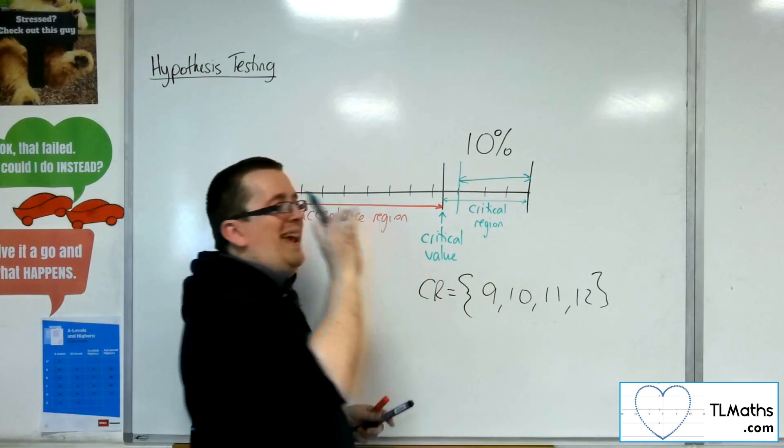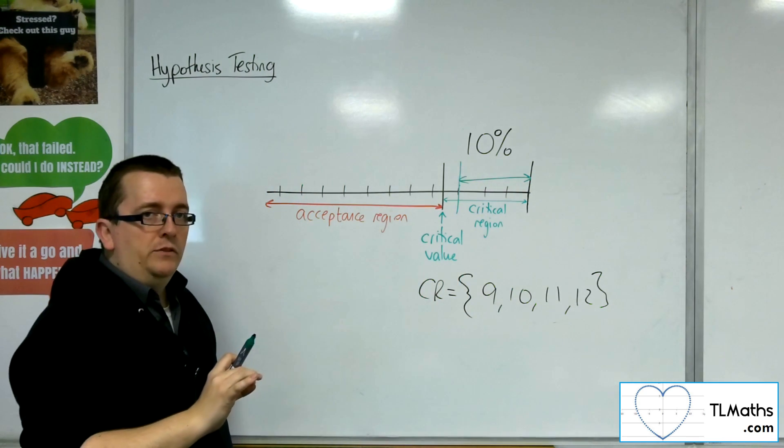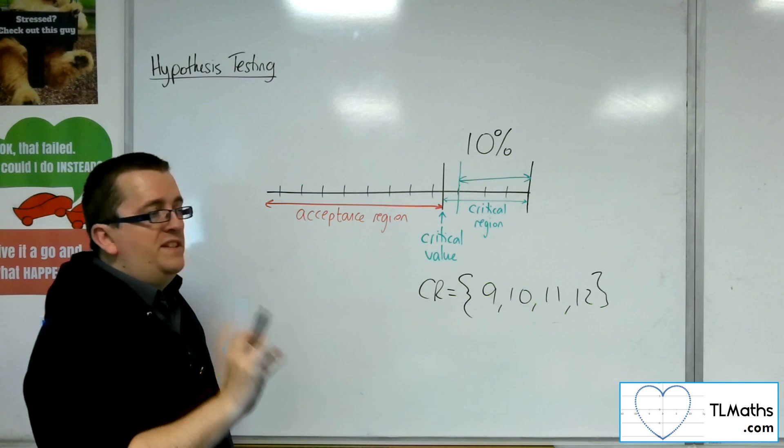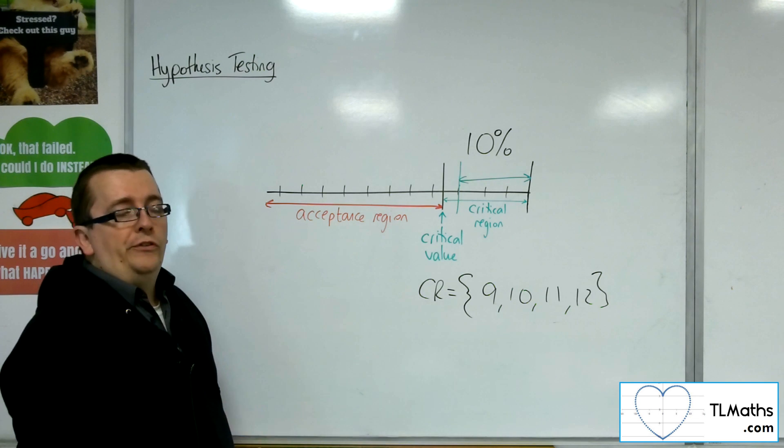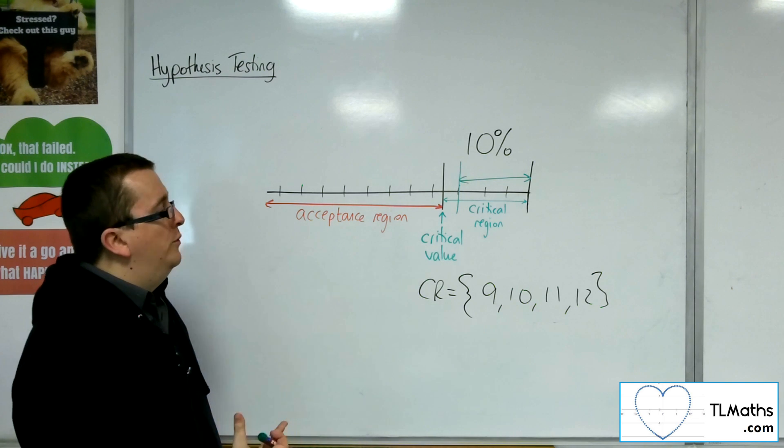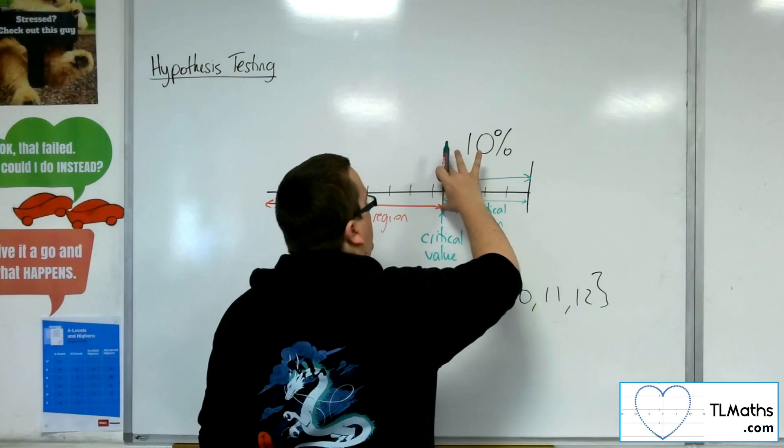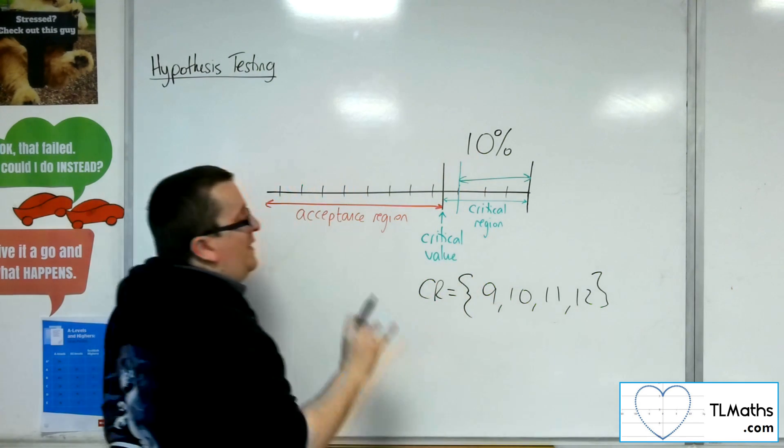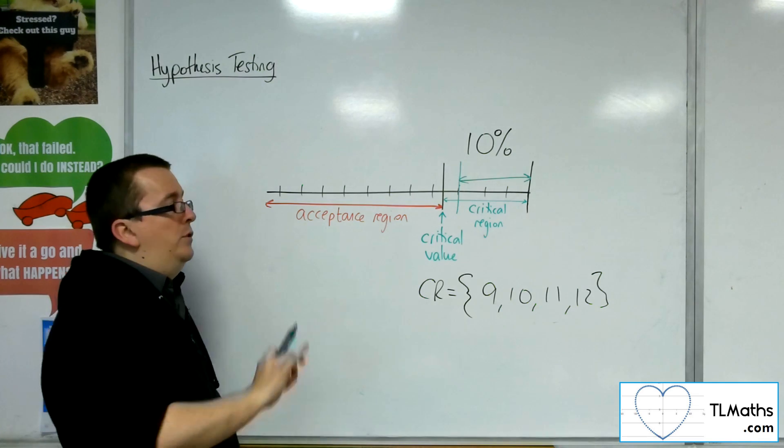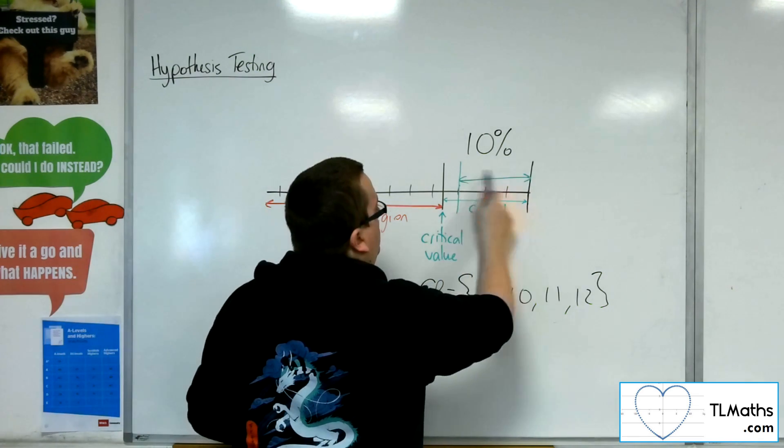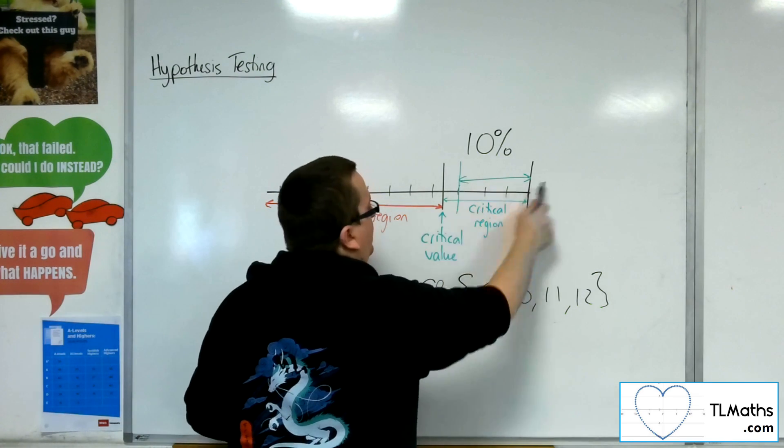So whatever that percentage is onwards, that would be the actual significance level. The 10% level has just been set arbitrarily, and because of the binomial distribution that you've set up, that's the figure you work with and compare values against. But the actual significance level would be from that region there, from that percentage onwards.